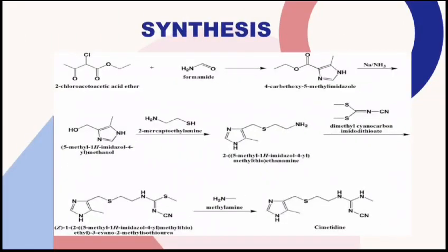Synthesis: The reaction of 2-chloroacetoacetic acid ether with formamide gives carbethoxy-5-methyl-imidazole. This then reacts with sodium and ammonia to give 5-methyl-1H-imidazol-4-yl-methanol, which then reacts with 2-mercaptoethylamine to give 5-methyl-1H-imidazol-4-yl-methylthioethanamine. This then reacts with dimethyl cyanocarbonimidodithioate to give the intermediate Z-1-[2-(5-methyl-1H-imidazol-4-yl)methylthioethyl]-2-cyano-2-methylisothiourea, which finally reacts with methylamine to give Cimetidine.